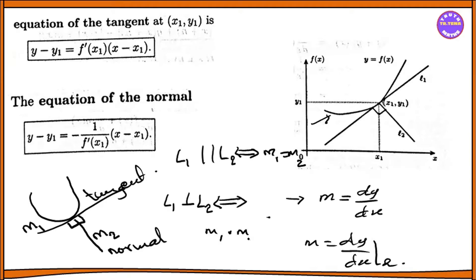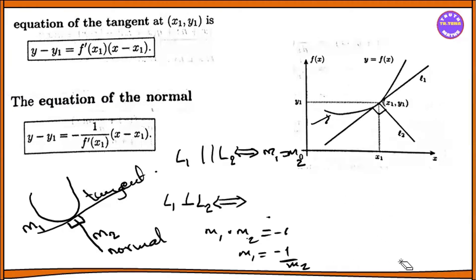M1 into M2 equals minus 1. If M1 is equal to minus 1 over M2, then the lines L1 and L2 are perpendicular. This means M2 is equal to minus 1 by M1. This is the same equation for perpendicular lines.